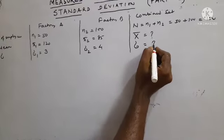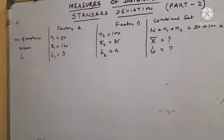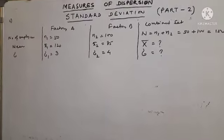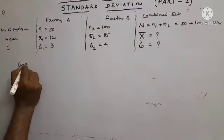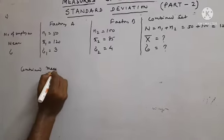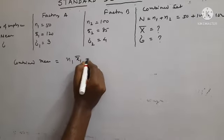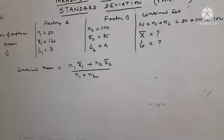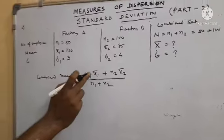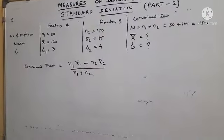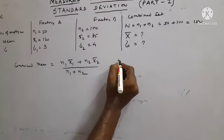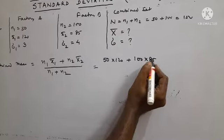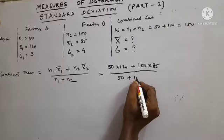We have to find combined mean and combined standard deviation. Combined mean equals N1 times X1-bar plus N2 times X2-bar, whole divided by N1 plus N2. Substituting: 50 into 120 plus 100 into 85, whole divided by 50 plus 100, which gives 6000 plus 8500 divided by 150 equals 14500 divided by 150.